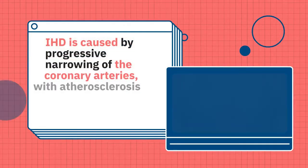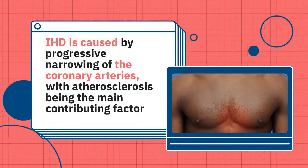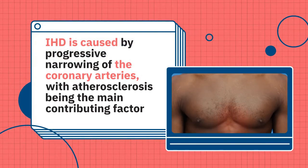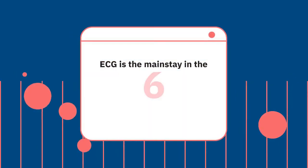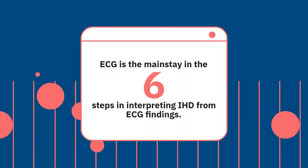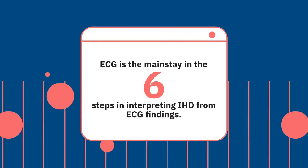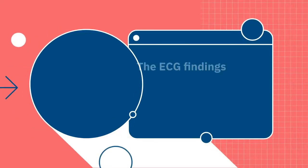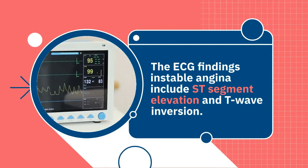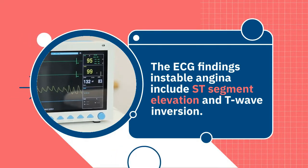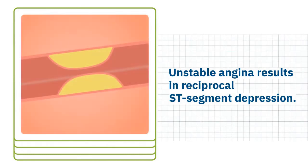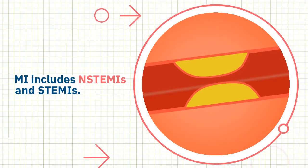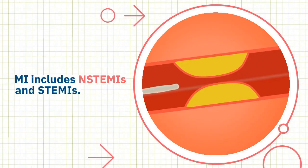IHD is caused by progressive narrowing of the coronary arteries, with atherosclerosis being the main contributing factor, and gradual progression results in MI. ECG is the mainstay in diagnosis, and there are six steps in interpreting IHD from ECG findings. The ECG findings in stable angina include ST segment depression and T wave inversion, while unstable angina results in reciprocal ST segment depression. MI includes NSTEMIs and STEMIs.